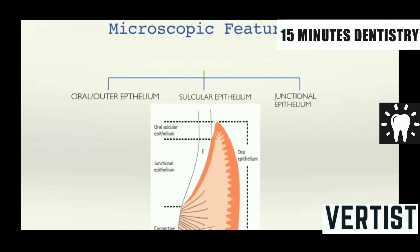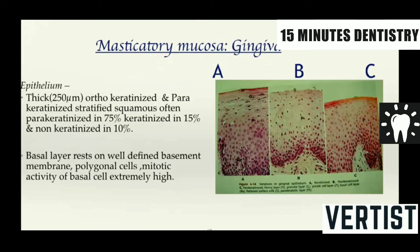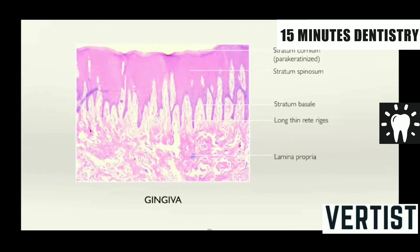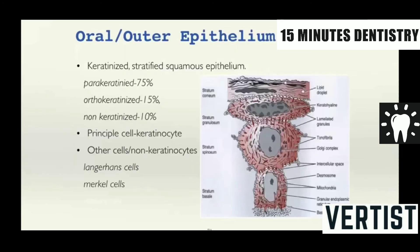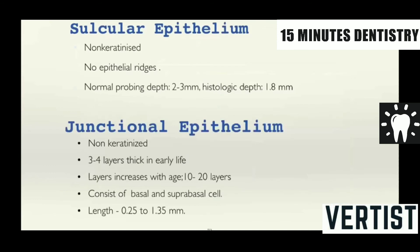Microscopically, the gingiva has the outer epithelium, the sulcular epithelium, and the junctional epithelium. The masticatory mucosa is 75% parakeratinized, 15% orthokeratinized, and 10% non-keratinized. Basal cells have a well-defined basement membrane; they are polygonal cells with high mitotic activity. Histologically you see long, numerous, slender rete ridges with a forking pattern — the long rete ridges increase the area for withstanding masticatory forces. The lamina propria is dense with collagen fibers and the submucosa is absent. The principal cells are keratinocytes; other cells include Langerhans cells, Merkel cells, and melanocytes.